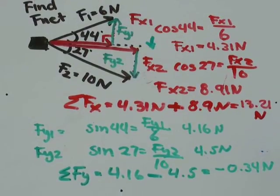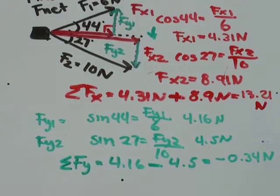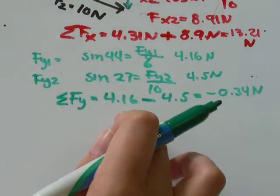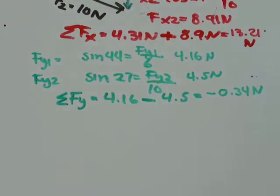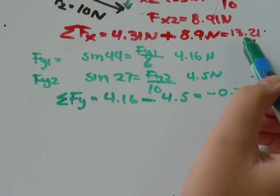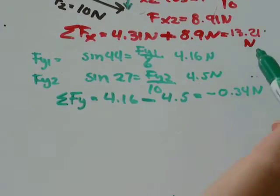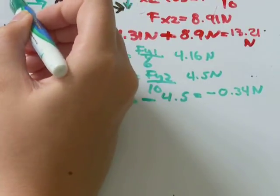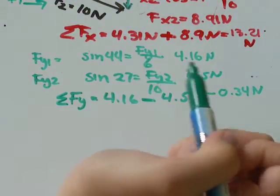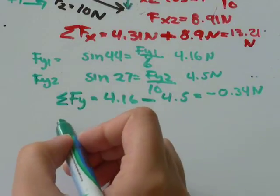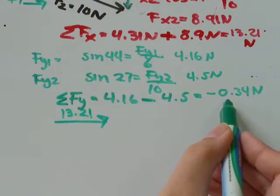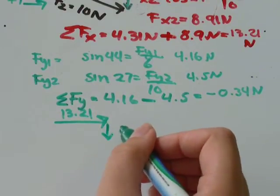So what we'll do is we'll use the sum of those two forces to figure out what the overall movement is of this object. So I had 13.21 newtons up here. So I'm going to define positive as being to the right and up are my positive directions. So 13.21 newtons, I'll say, is this way. And negative 0.34 newtons would be going down.